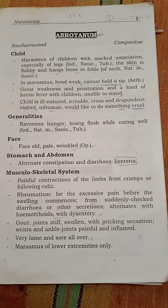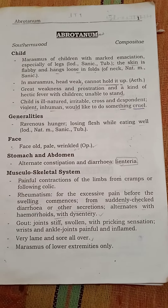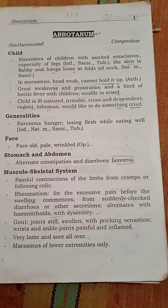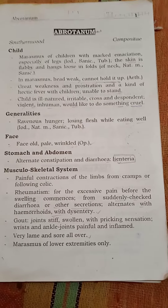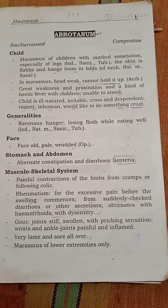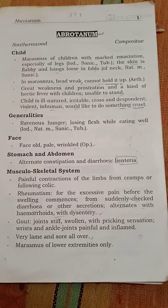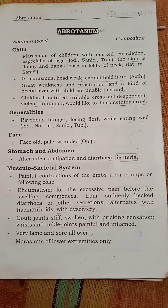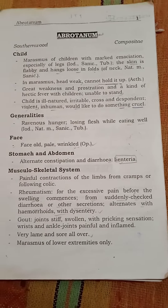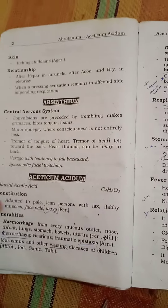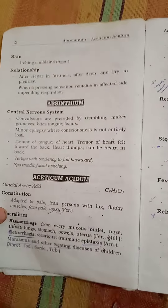With dysentery, the gut and joints are stiff and swollen with a pricking sensation. The wrist and ankle joints are painful with inflammation. The patient is very lame and sore all over. There is marasmus of the lower extremities only, with itching of the skin.